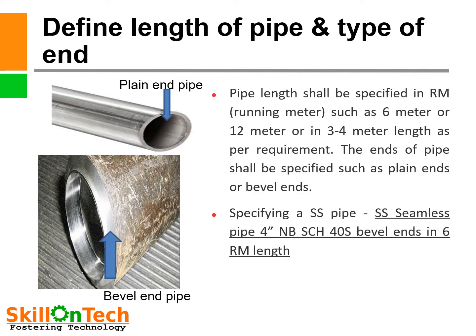Define length of pipe and type of end. A picture of a pipe with a plain end and another picture with a bevel end pipe are shown on the slide. We must specify the length of pipe in running meters — such as 6 meters, 12 meters, or 3 to 4 meters as per requirement. The ends of pipe shall be specified as plain ends or bevel ends. If we have to carry out welding of the pipeline, then we must procure bevel end pipes. For example, specifying a SS seamless pipe: 4 inch NB, schedule 40S, bevel ends, in 6 running meter length.